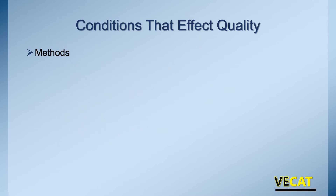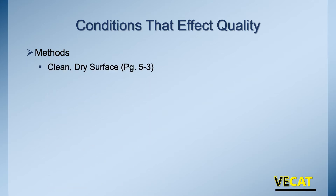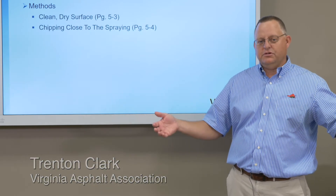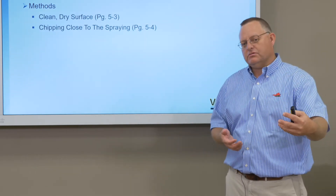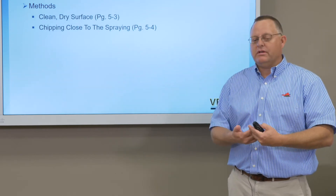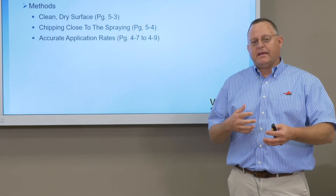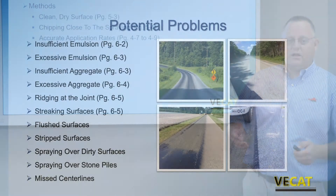The methods we follow also impact quality. We need a clean, dry surface from the very beginning. We must make sure the chipping operation stays close behind the emulsion spraying — if there's a large distance, the emulsion starts to break before the chipper arrives and we won't get good embedment, losing material. Application rates must be correct depending on whether we're doing a seal treatment, modified single seal, or modified double seal — the right rates for both emulsion and aggregate chips are essential.